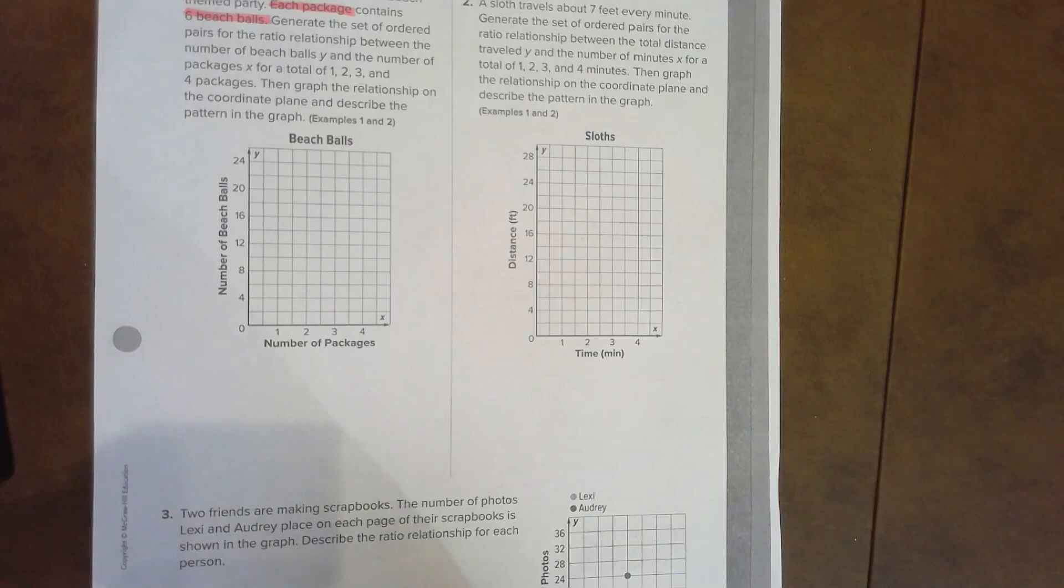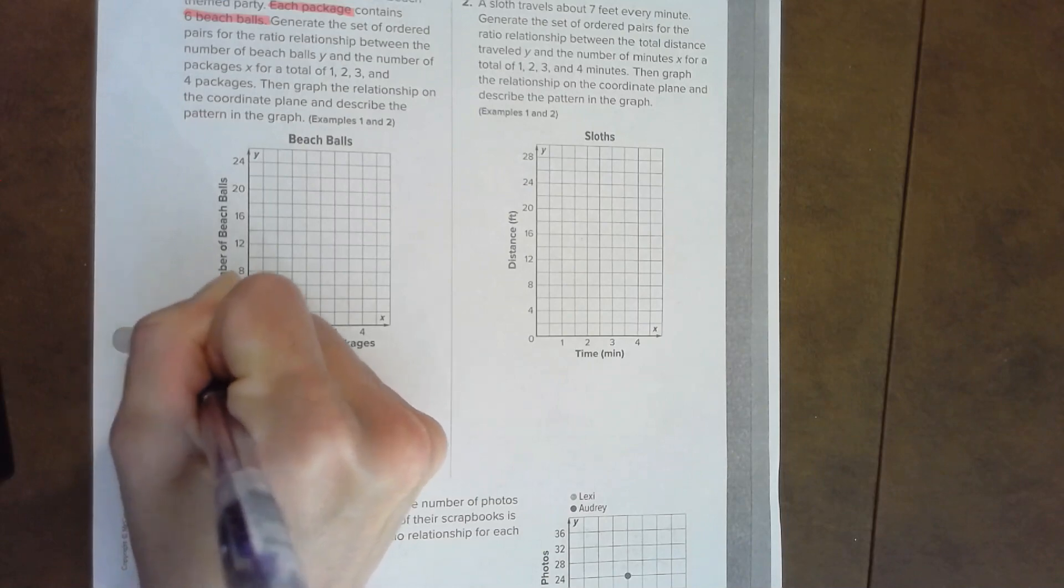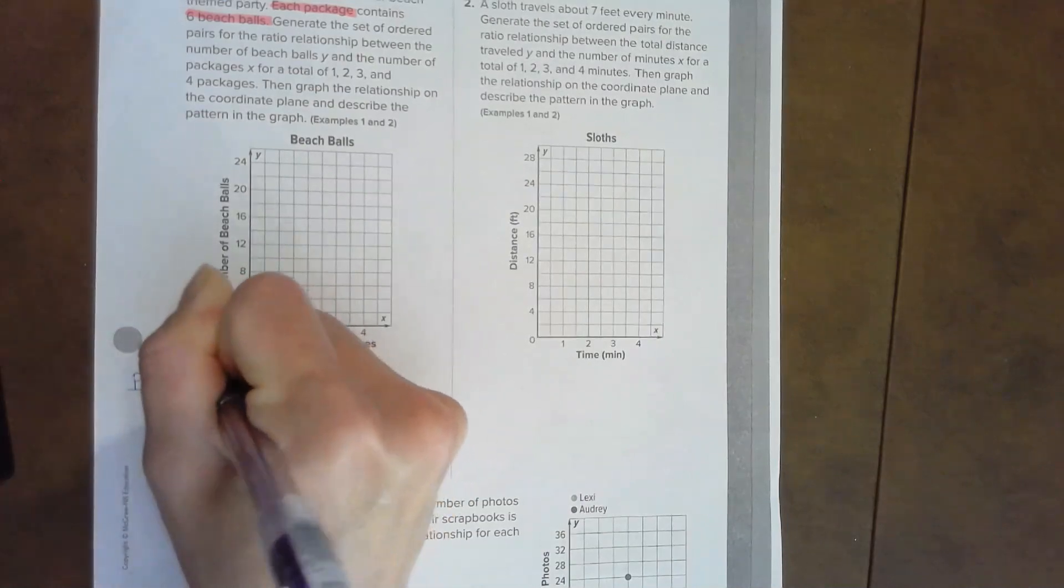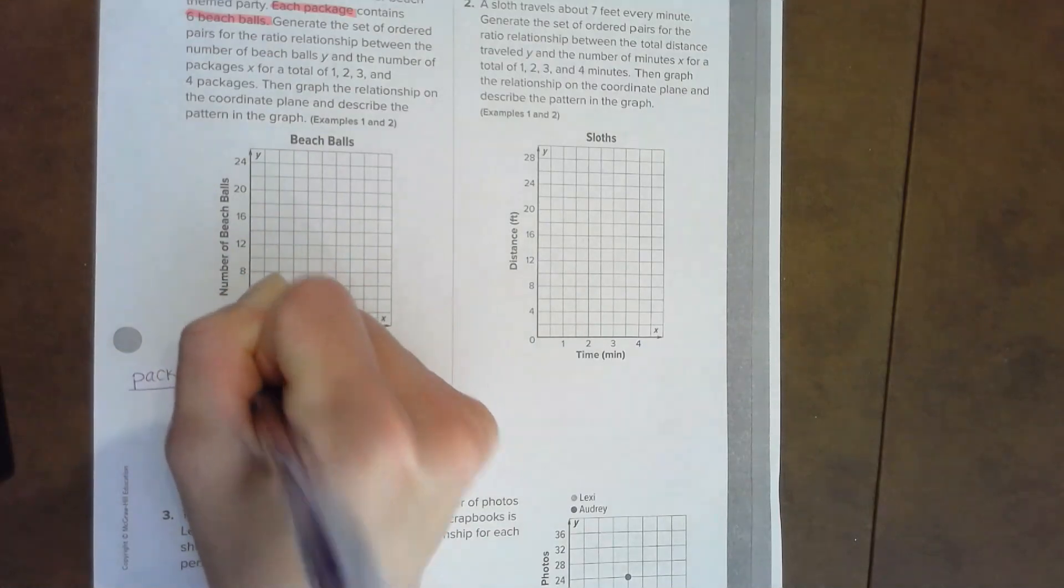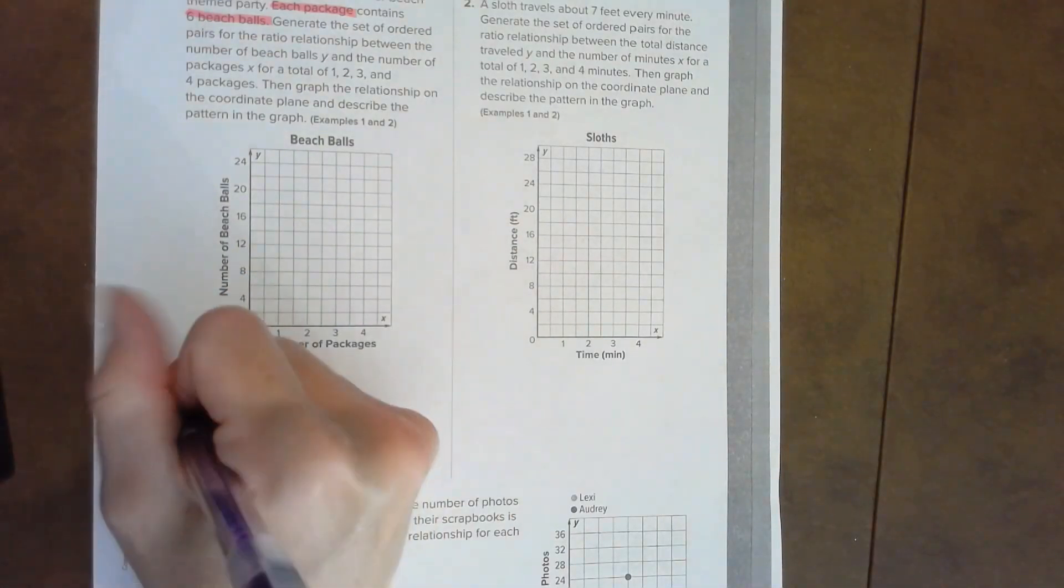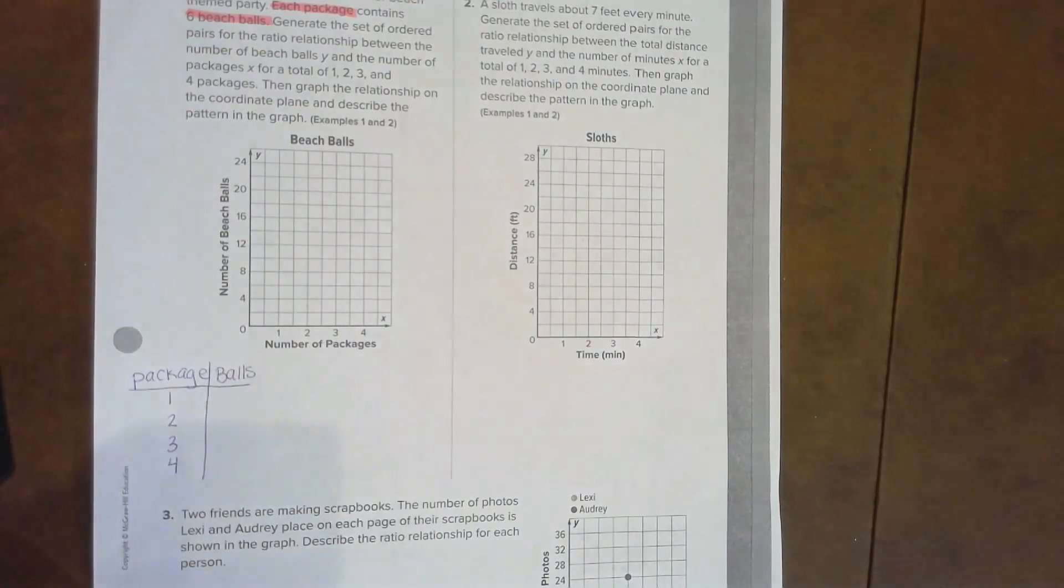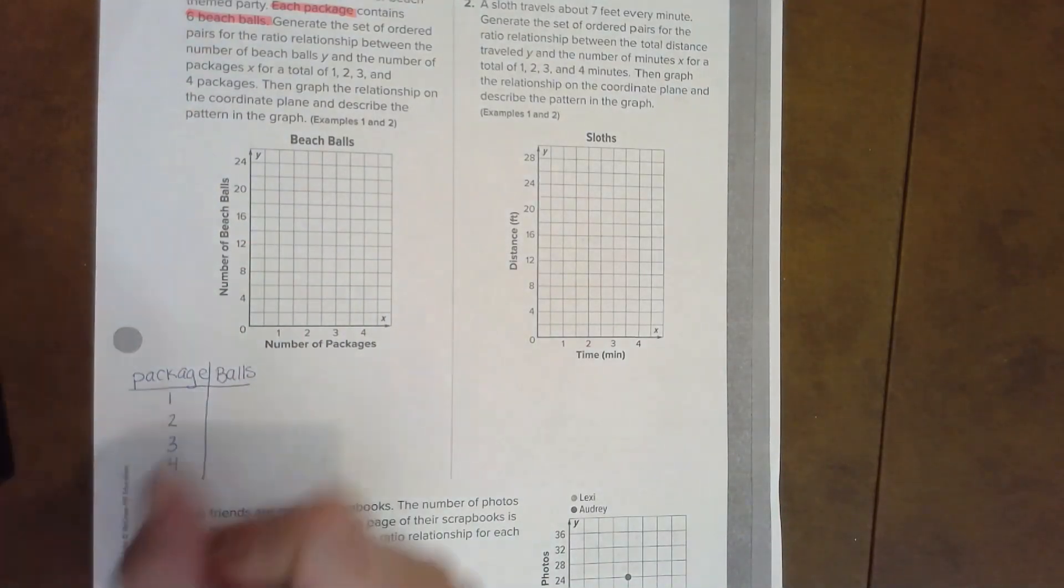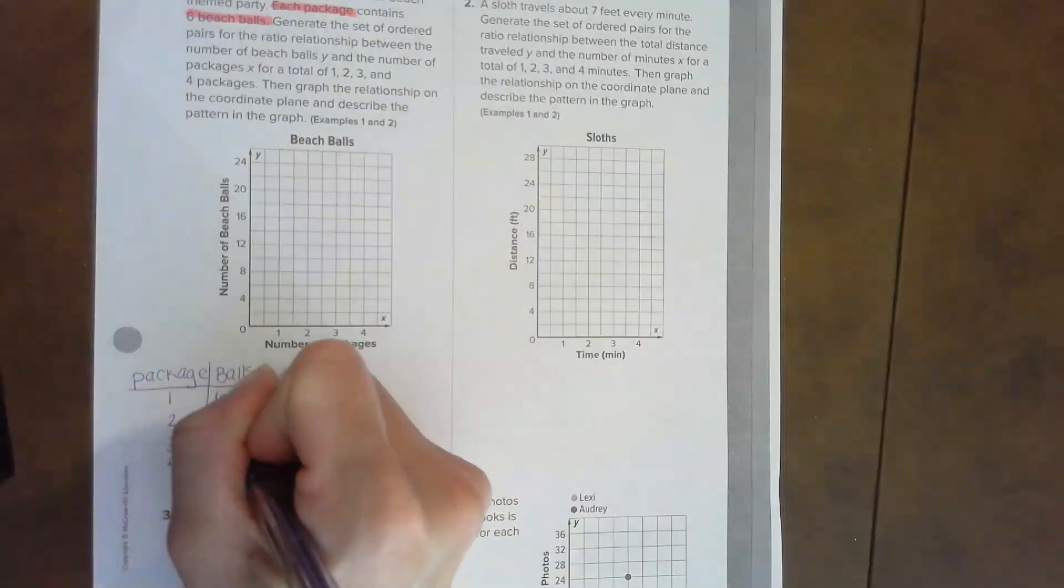The two things that are being compared are the balls and the packages, so we're going to write package and then balls. We know they're going to be four packages: one, two, three, four. It tells me that up above there are six balls in one package. Six goes here and that sets the ratio relationship. We're going to count by sixes: six, twelve, eighteen, twenty-four.